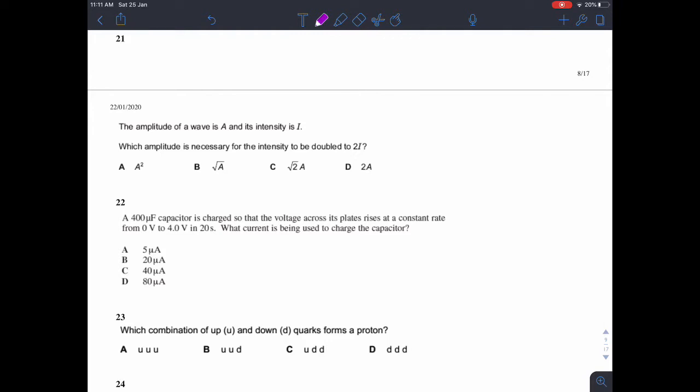Question 21. The amplitude of a wave is A and its intensity is I. Which amplitude is necessary for the intensity to be doubled to 2I? Okay, as is the way always with these two situation questions, we want to write out both situations. So first of all, we know that intensity is proportional to amplitude squared.